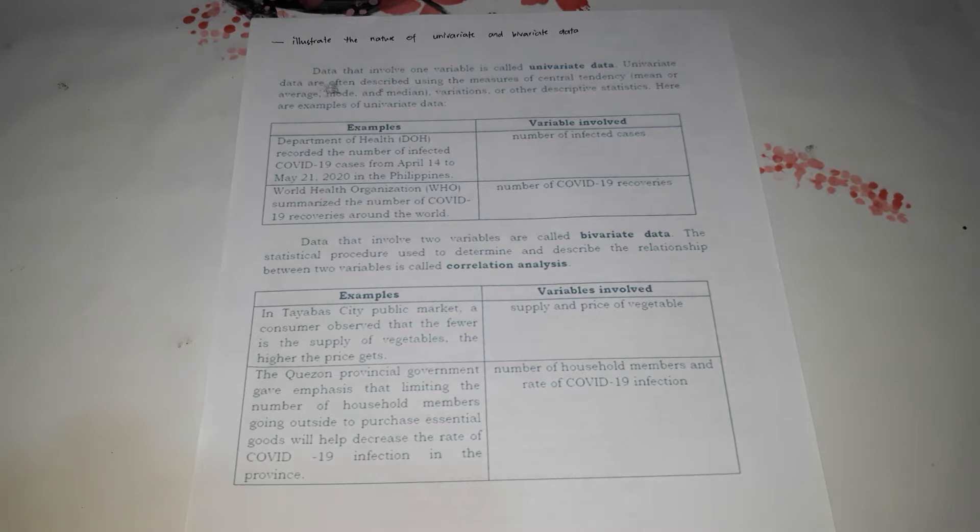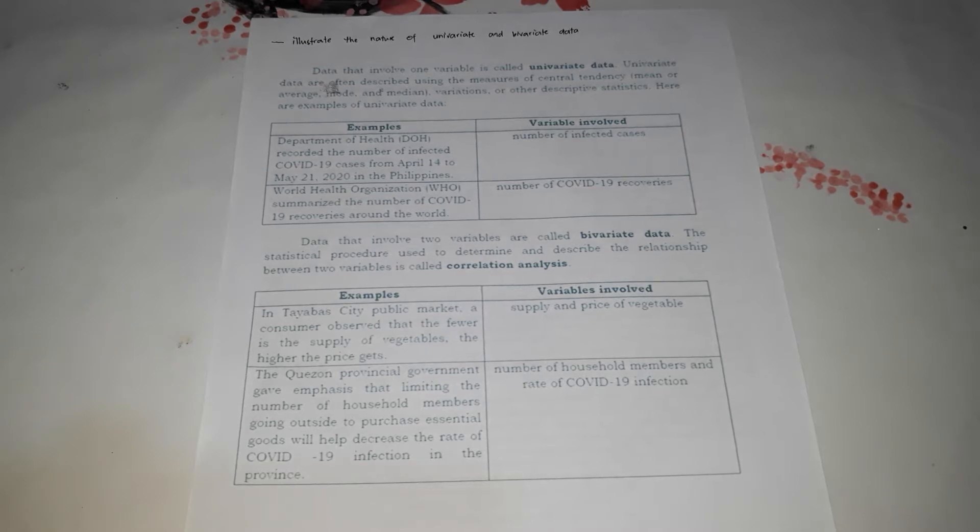We're going to illustrate the nature of univariate and bivariate data. First, we're going to talk about variables. A variable is an attribute or characteristic that may take more than one value, which can either be measured or classified. Just like in algebra, variables are represented by x and y, where x could be any number in the solution set.